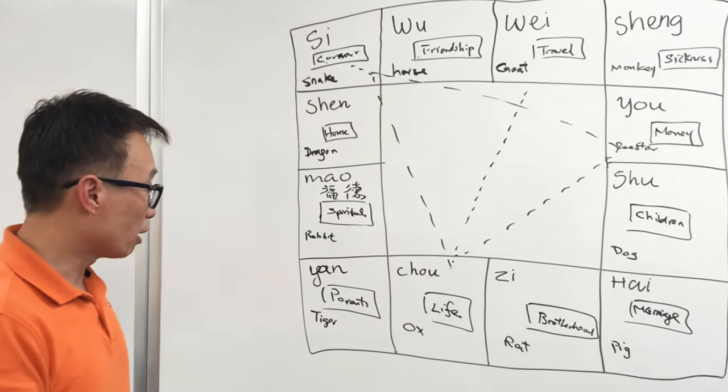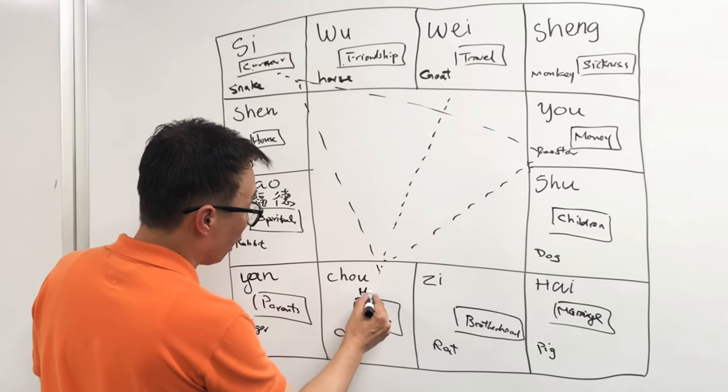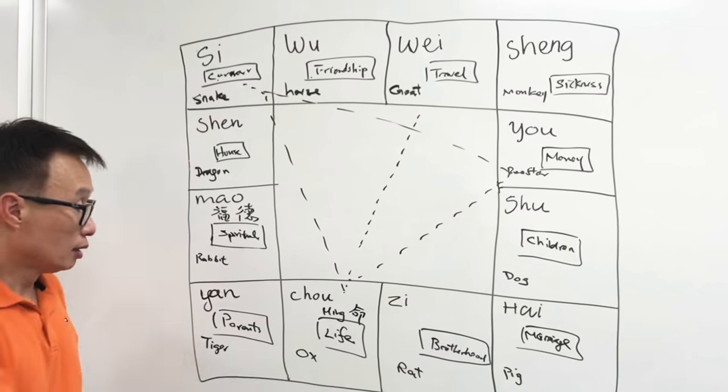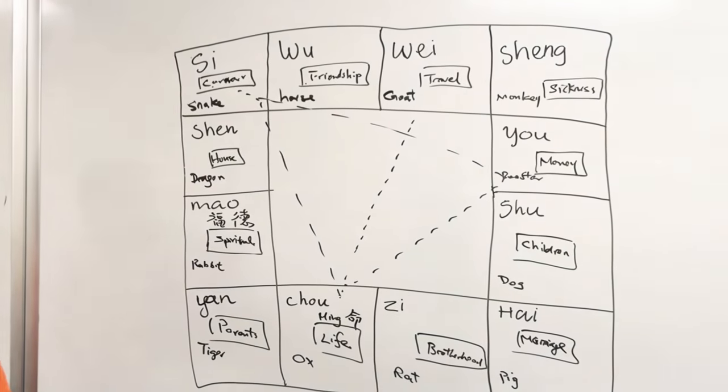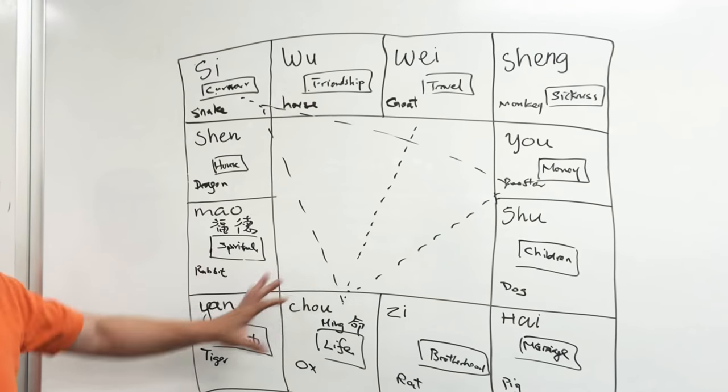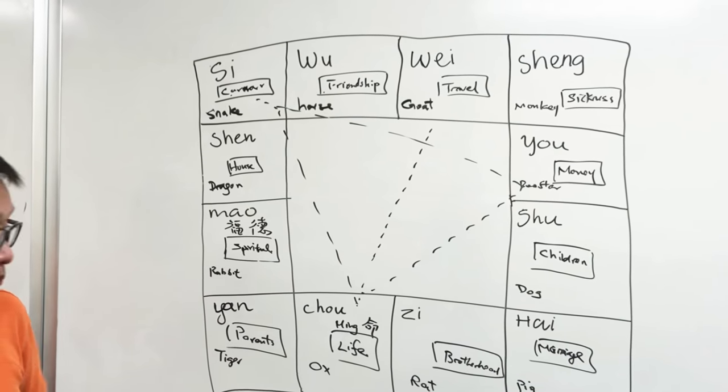M-I-N-G, Ming. So this is the house of Ming. It tells us our character, how we feel things, combined with the spiritual. These two houses basically tell you a lot about the person or the character of the person.